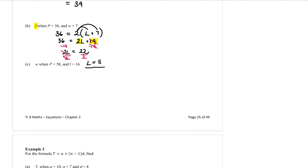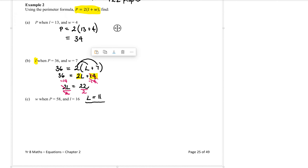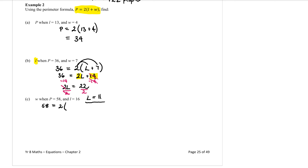Part c: find w when p equals 58 and l equals 16. So our formula at the top. This time p is equal to 58, so when I substitute that in, I have 58 equals 2 bracket l — but l is 16 — so 16 plus w, and I don't know w this time so that stays in. Again I have an equation where I want to find w, so I need to expand those brackets. 2 times 16 is 32, then 2 times w is positive 2w. So I have 58 equals 32 plus 2w.